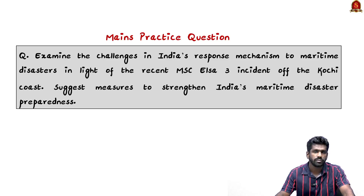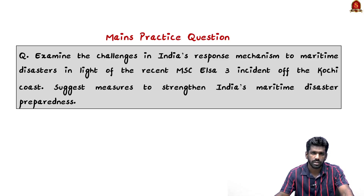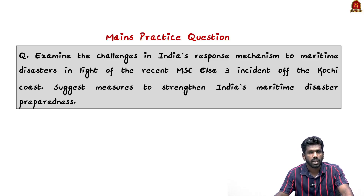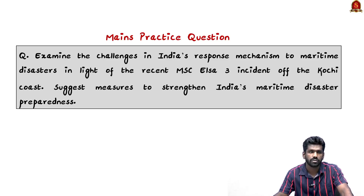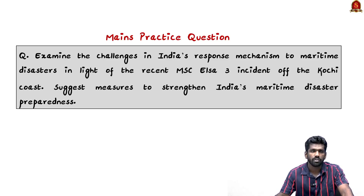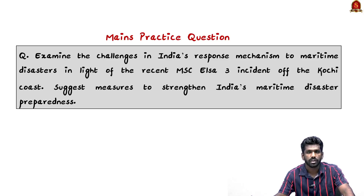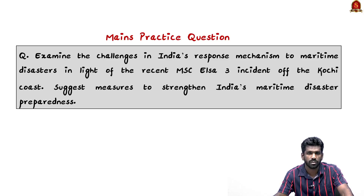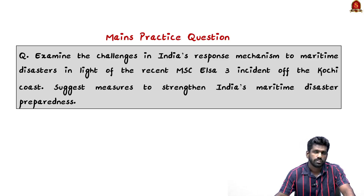The Elsa 3 incident is a warning for India. The country aims to become a global maritime power, but its disaster preparedness must be significantly improved. A decentralized and technology-driven approach is necessary for handling maritime disasters. The mains practice question asks: examine the challenges in India's response mechanism to maritime disasters in the light of the recent MSC Elsa 3 incident off the Kochi coast, and suggest measures to strengthen India's maritime disaster preparedness.